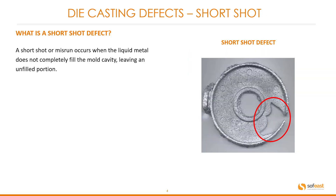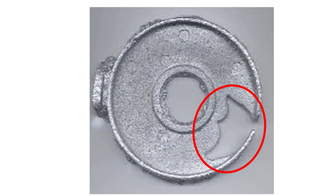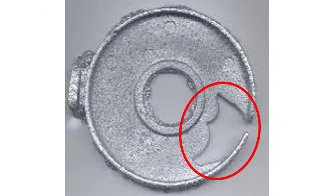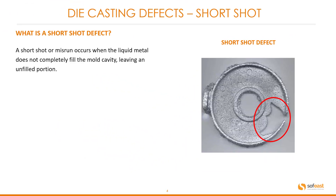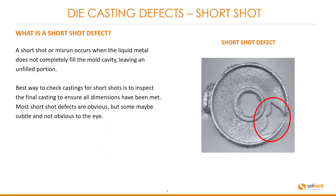Short shot. What is a short shot defect? A short shot or miss run occurs when the liquid metal does not completely fill the mould cavity, leaving an unfilled portion. We can clearly see this unfilled portion in this casting here in this image — this is a short shot defect. The best way to check castings for short shots is to inspect the final castings to ensure all dimensions have been met. Most short shot defects are obvious but some may be subtle and not obvious to the eye.